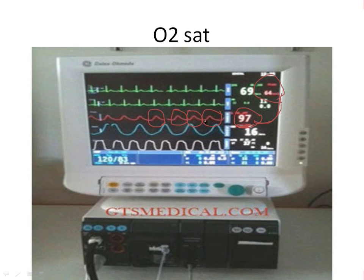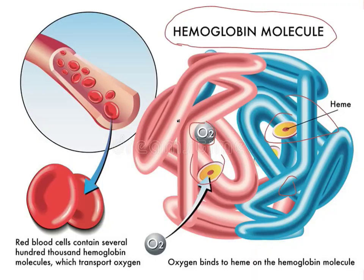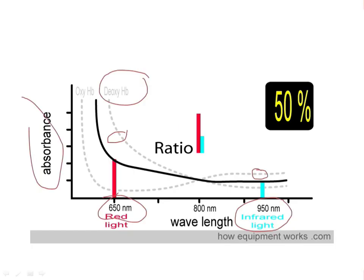These are the three things that we can benefit from the pulse oximeter. Of course, the wave correlates with the ECG and the heart rate. It can give you a hint if we have an arrhythmia, bradycardia, or asystole, for example.